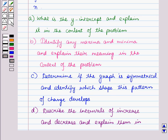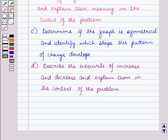Part C is: determine if the graph is symmetrical and identify which shape this pattern of change develops. And part D is: describe the intervals of increase and decrease and explain them in the context of the problem.